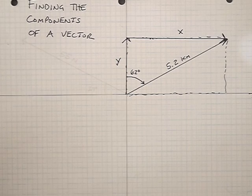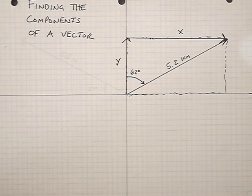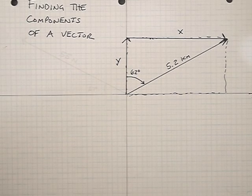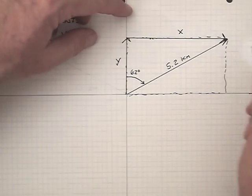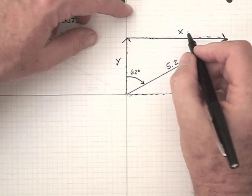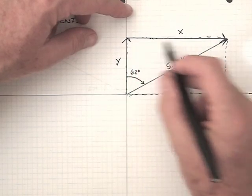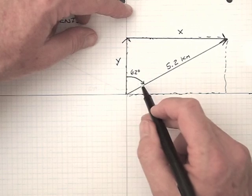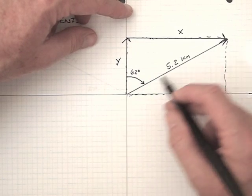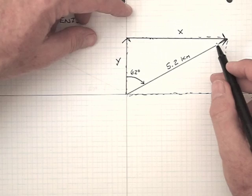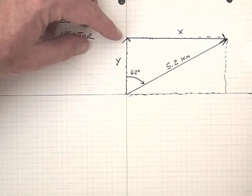So now I have a right triangle and I can use my basic right triangle trigonometry to calculate the x and the y components. Starting with the x component, we can see that we have the opposite side of this triangle. We know this angle is 62 degrees, and the hypotenuse is 5.2 kilometers.